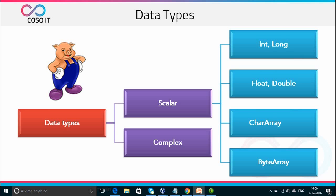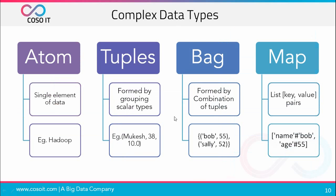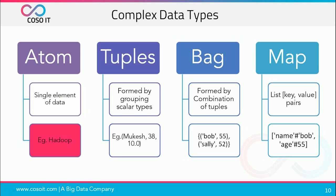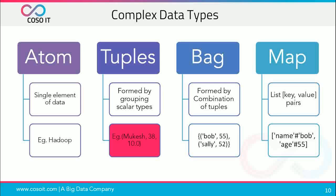Complex data types include atom, tuples, bag, and map. Atom is a single element of data — for example, 'Hadoop'. Tuples are formed by grouping scalar types; a tuple is an ordered set of fields represented by braces, and these fields can be of any data type — for example, one char array, one int, and one float.